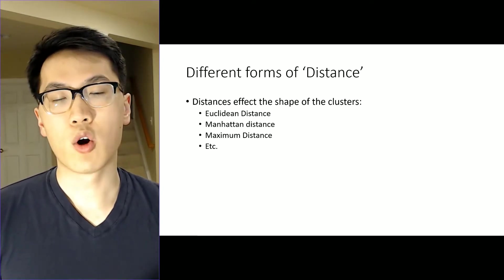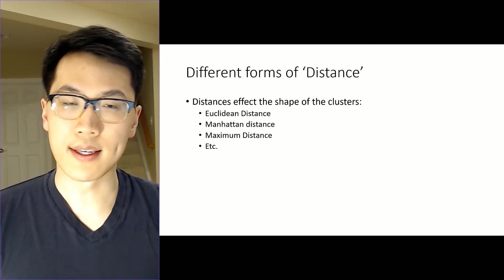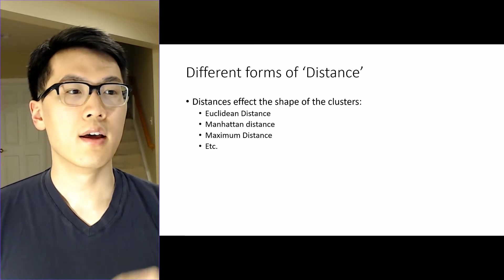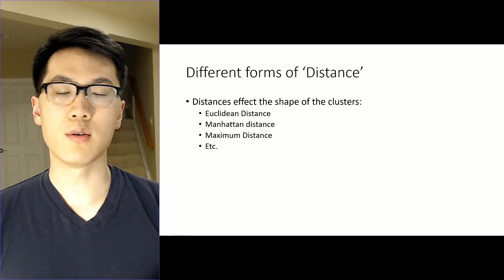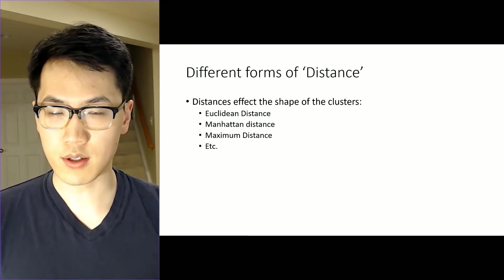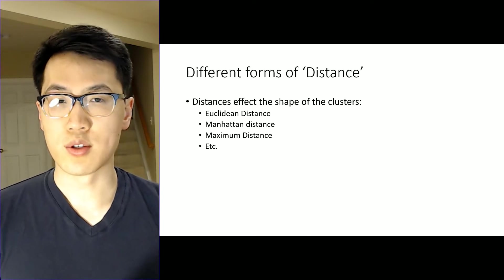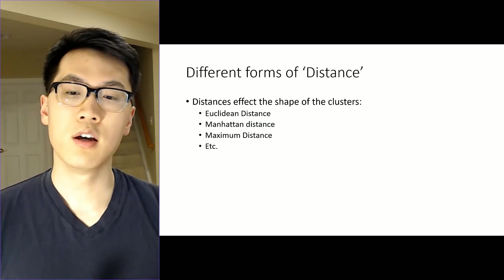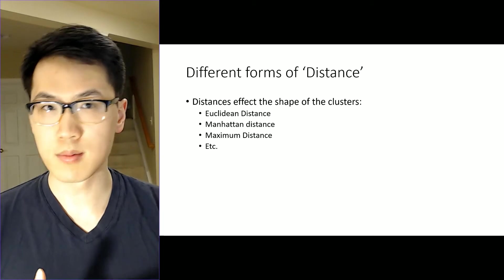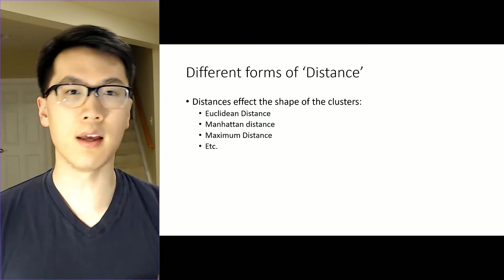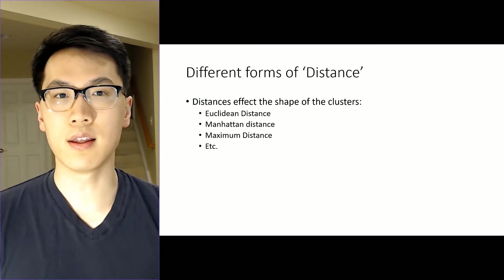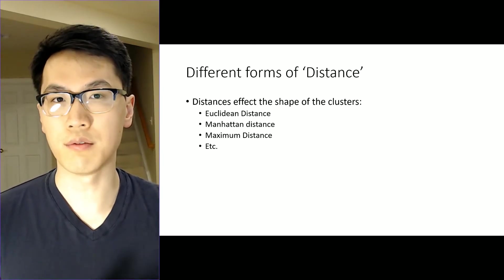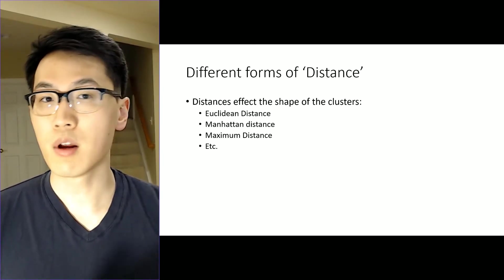Going back to the distance — whereas k-means has a typical Euclidean distance, for this particular method you can use a variety of distance metrics. You can use the Manhattan distance, the same Euclidean distance as k-means, maximum distance, averages, medians — it essentially uses any type of distance flavor, and there is definitely a pro to that.